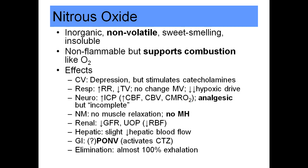The first agent we're going to speak about is nitrous oxide. Nitrous oxide is unique because it's inorganic — it's just di-nitrogen oxide. It's actually not volatile; it's just a plain old gas. It smells sweet. It's very insoluble. Nitrous oxide is not flammable — none of our anesthetics are flammable these days — but it does support combustion like oxygen. The three things you need for fire are a heat source, a fuel source, and an oxidation source, and nitrous oxide can replace oxygen as the oxidation source.